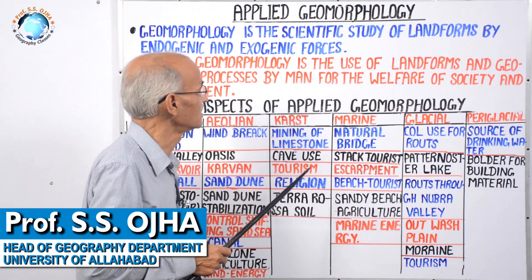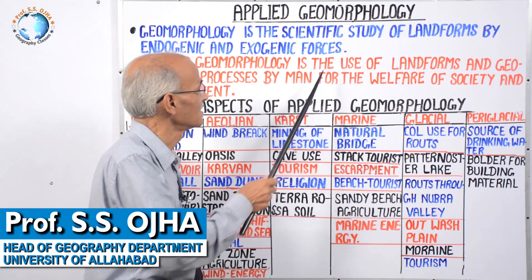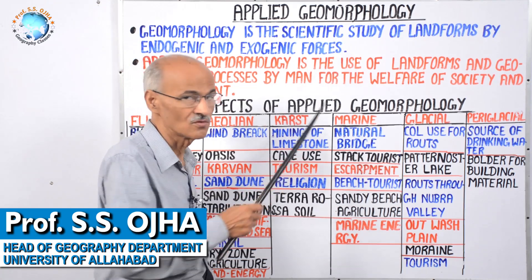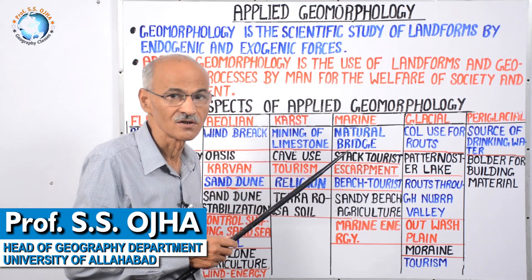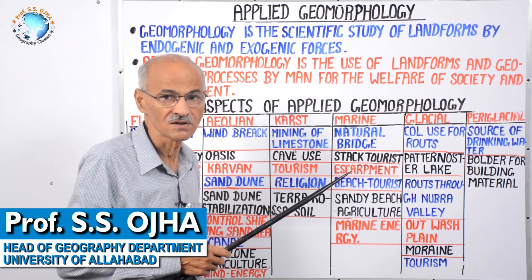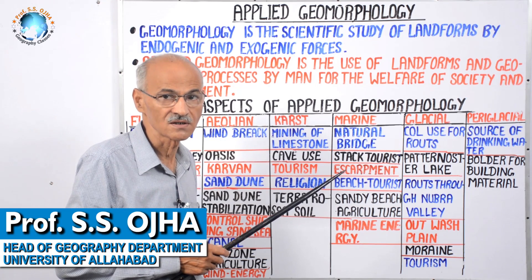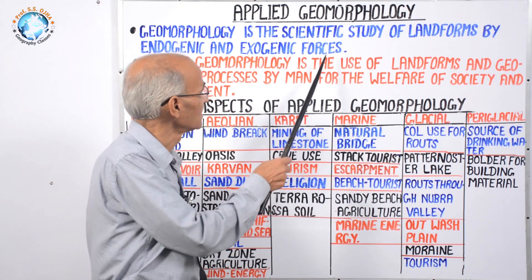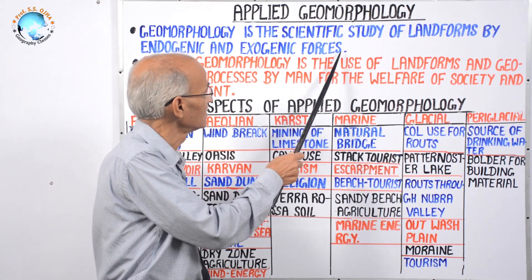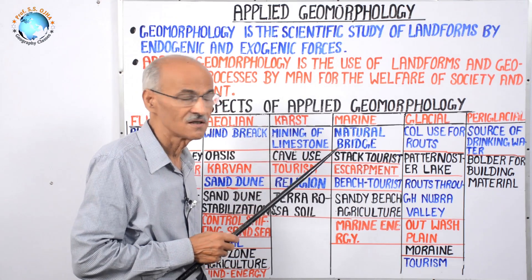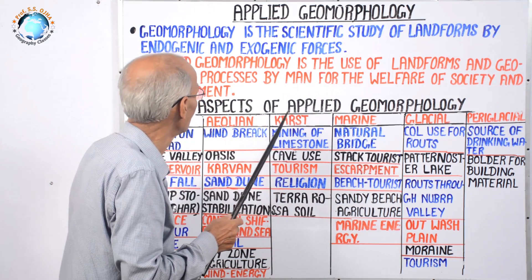Endogenic forces give birth to landforms and different slopes. While exogenic forces like fluvial, karst, marine, wind, glacial, and periglacial processes reshape these landforms and bring about change in their shape and size.